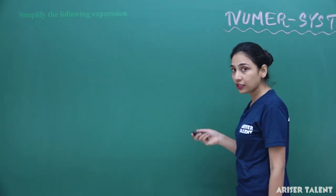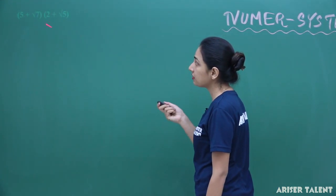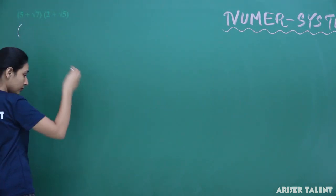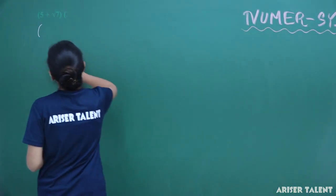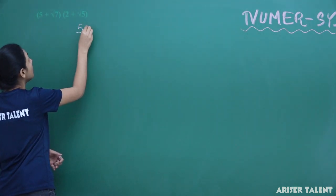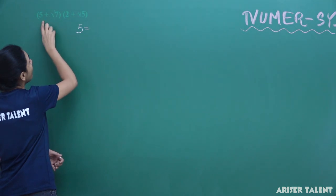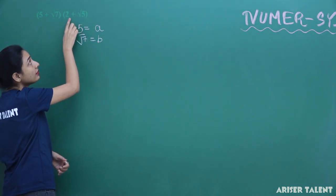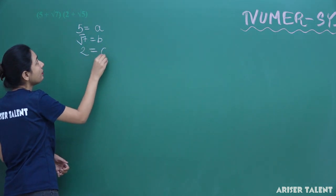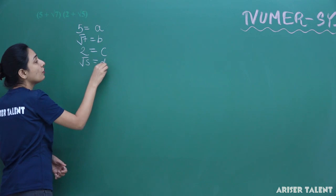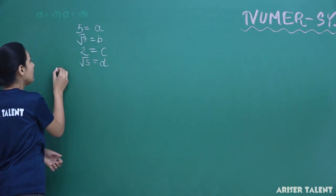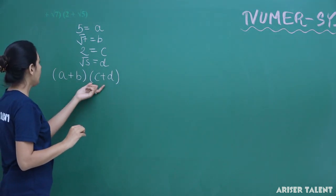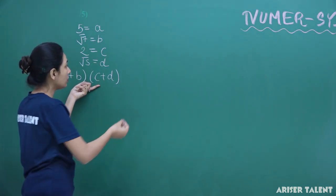Here, simplify the following expression. The very first expression — can you identify which identity it is? Let us suppose 5 equals to a, root 7 equals to b. This is number 2, so 2 will be c and root 5 will be d. We were having one identity similar to that: a plus b and c plus d. What was that identity?